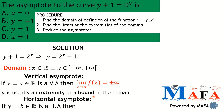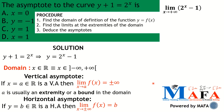For horizontal asymptotes: if the line y equals b (where b is a real number) is a horizontal asymptote to the curve y equals f(x), then the limit as x tends to plus or minus infinity of f(x) equals b. So whenever you compute the limit at plus infinity or minus infinity and it gives a real number, that real number is the horizontal asymptote.